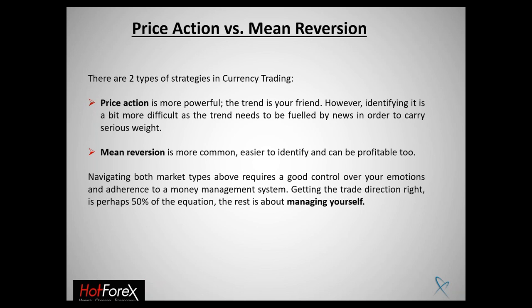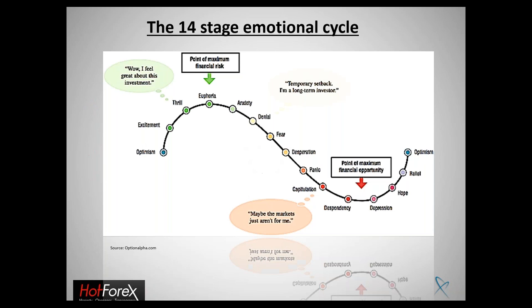It does take time to develop proper emotion control — it takes a lot of practice. You just have to be patient, analyze the mistakes you make, and adjust accordingly. This is the 14-stage emotional cycle. Let me briefly go through it. Starting from the left: let's say you're really optimistic about a trade opportunity, you enter the trade, and it turns out really well in the beginning. Perhaps you've read that holding on to good investments to reap higher profits is recommended.